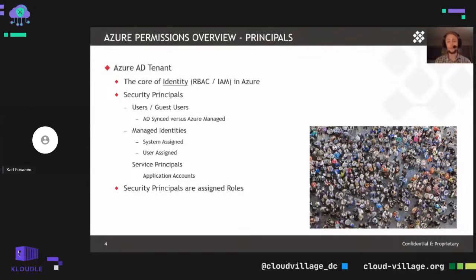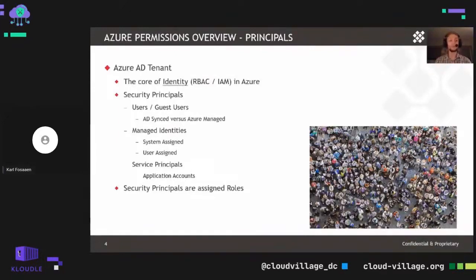Principals are made up of different identities within Azure Active Directory. These could be users or guest users — primary users being either part of a synced Active Directory environment or direct Microsoft-managed accounts that only live in Azure Active Directory. Guest users are part of a different tenant for the core of their identity, and can be added to your tenant and provided access through application roles or custom roles. For managed identities, we have system-assigned and user-assigned, where system-assigned ties the identity to the resource itself versus user-assigned, which is more of a subscription-level identity applied to individual resources.